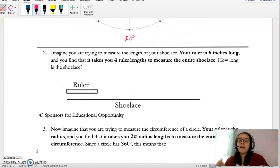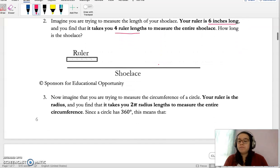For number two, it says imagine if you are trying to measure the length of your shoelace. Your ruler is six inches long, and you find it takes four ruler lengths to measure the entire shoelace. How long is the shoelace? So if your ruler is six inches long, and it takes you four ruler lengths, six times four, how much is that? Your shoelace is that much long. And then you continue, it's just a warmup.